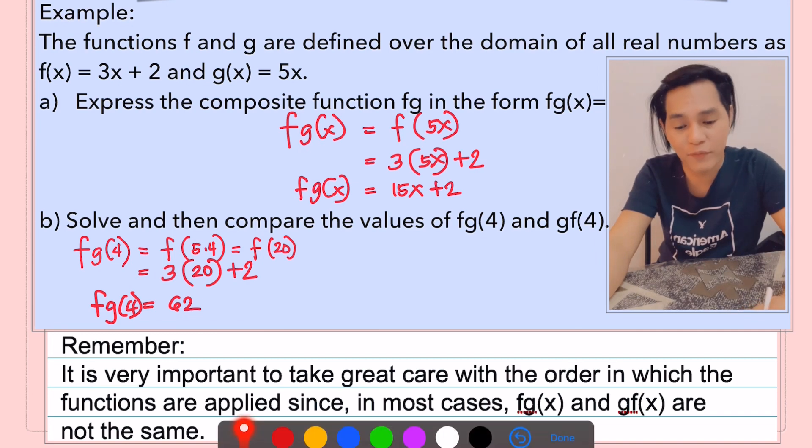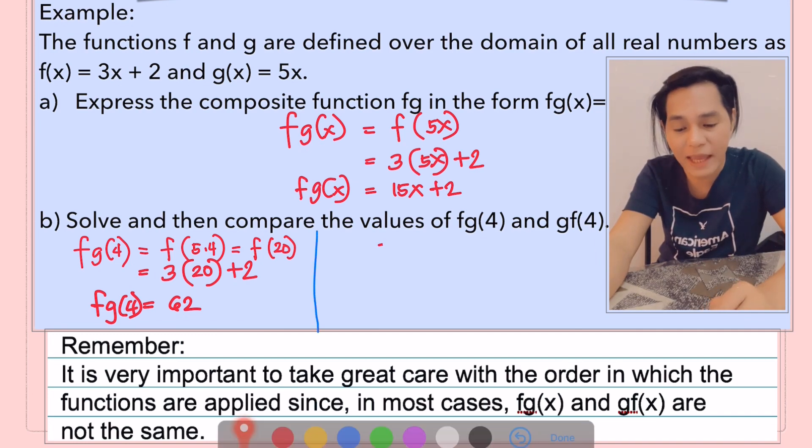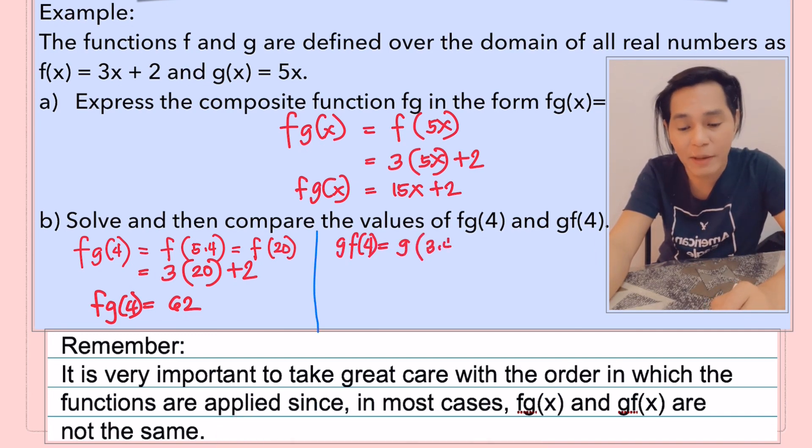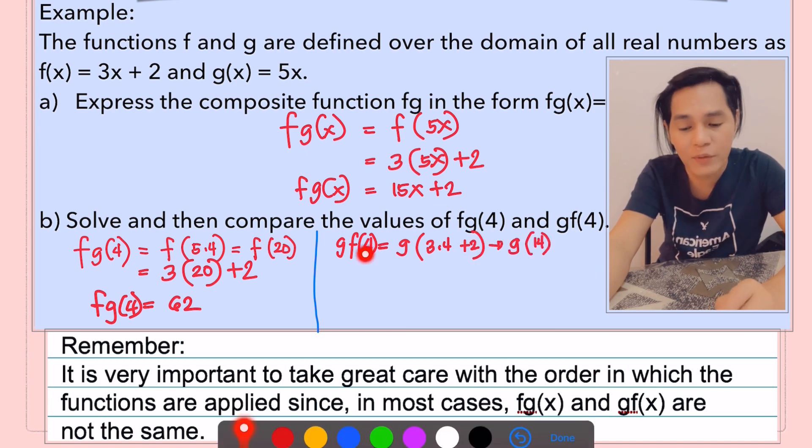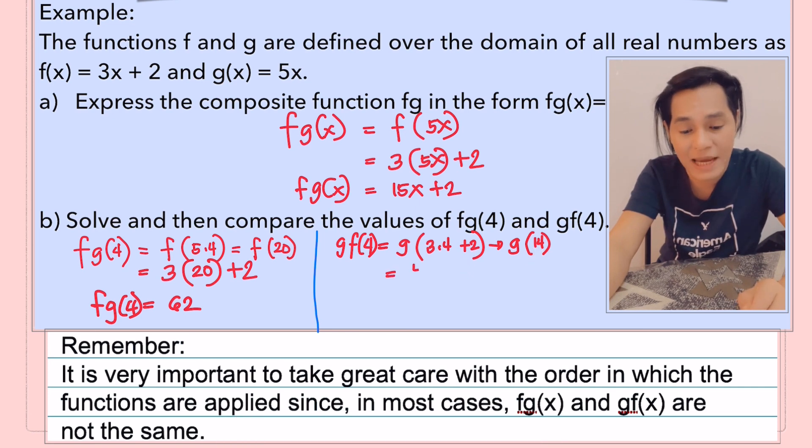Now, let's have g of f of 4. First, I'm copying the function and then copy g first and apply f to 4, meaning we are going to substitute 4 to the function of f which is 3x plus 2. That's why you have there 3 times 4 plus 2 is equal to 14. So now we have g of 14, meaning we apply g to 14.